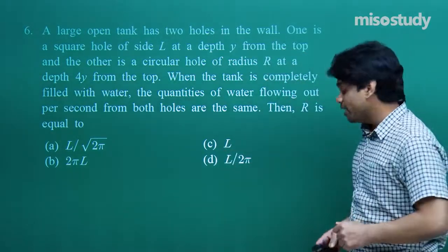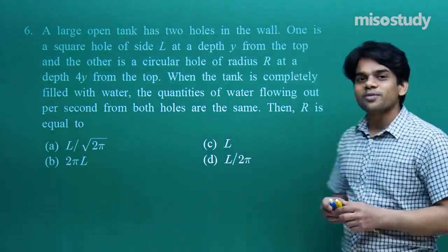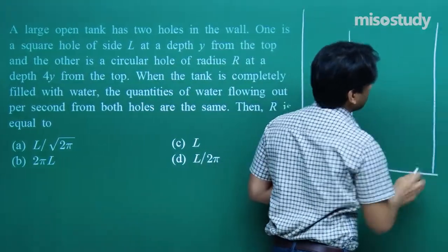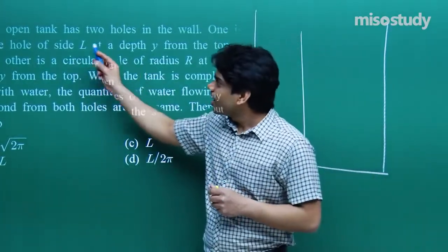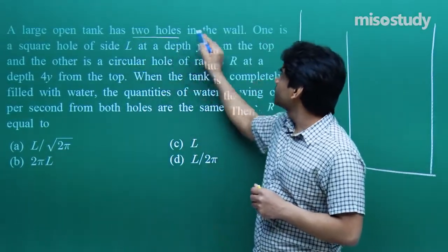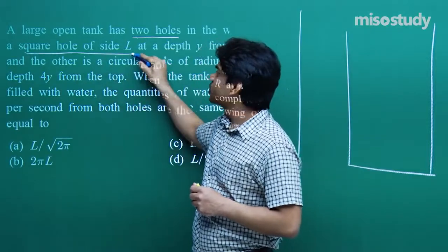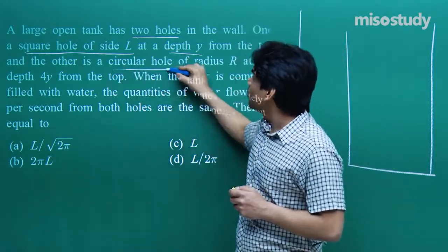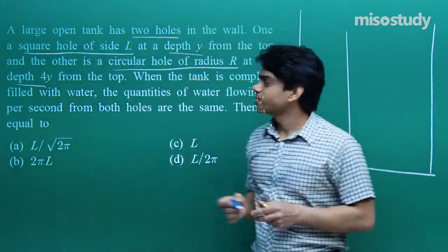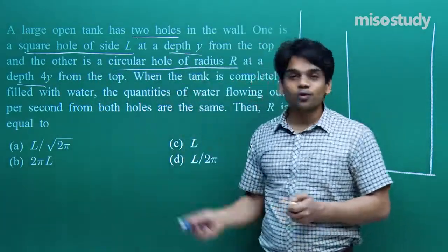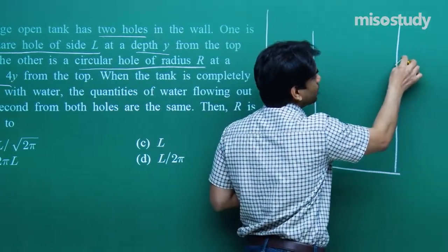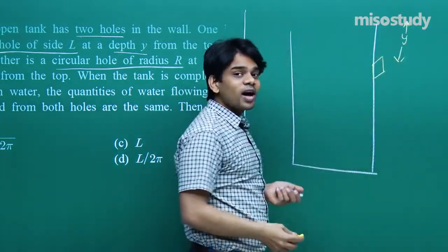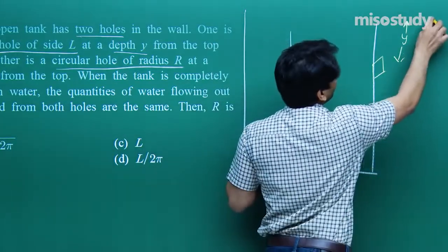I hope you can clearly imagine the scenario. There's a tank with two holes. One is a square hole of side capital L at a depth y from the top, and the other is a circular hole of radius r at a depth 4y from the top. Let me draw the diagram — a square hole at depth y from the top and a circular hole at depth 4y from the top, with radius r.